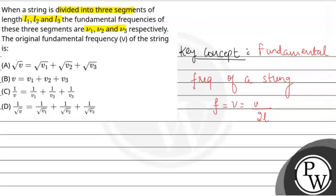Now in this question, what we have is a string, for example, this is our string and we have divided it into three equal parts: L1, L2, and L3, and the fundamental frequencies are ν1, ν2, and ν3. So if we see the original string, then we have a length L. They are asking what is the original fundamental frequency ν of the string.